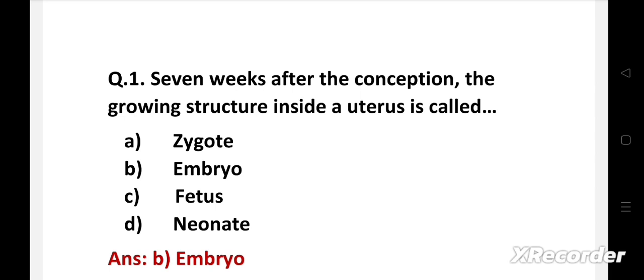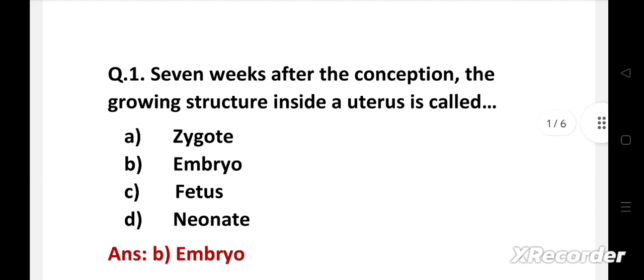Conception to eight weeks of gestation, it is called embryo. And after eight weeks to delivery, it is called fetus. Birth to four weeks, that is 28 days, it is called neonate. And after four weeks to one year, it is called infant.